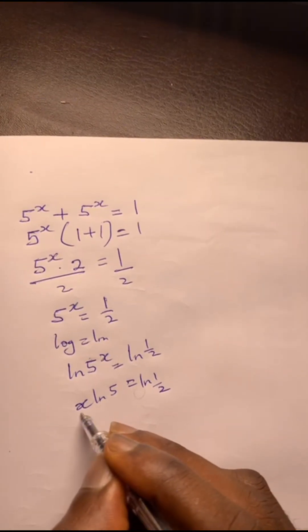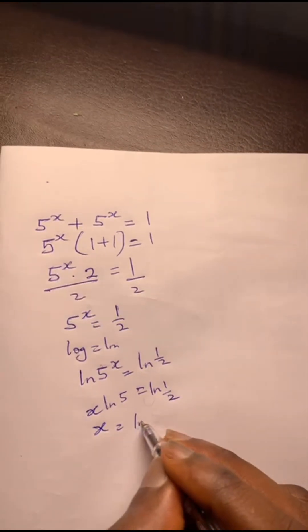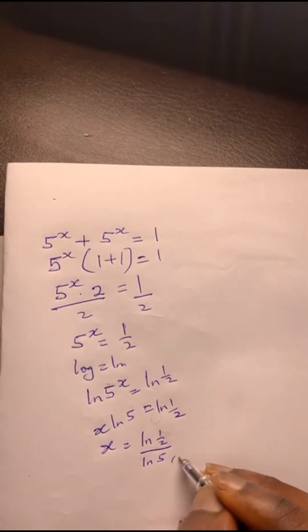And then you're looking for x, divide on both sides by ln 5. So you got x equals ln 1 over 2 over ln 5. This is the final answer.